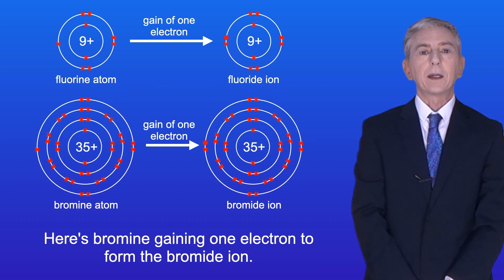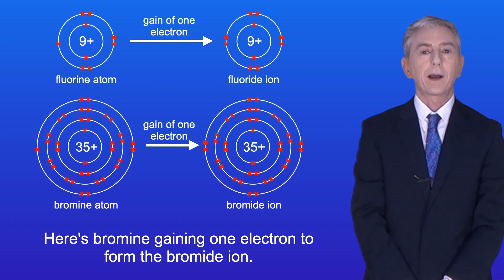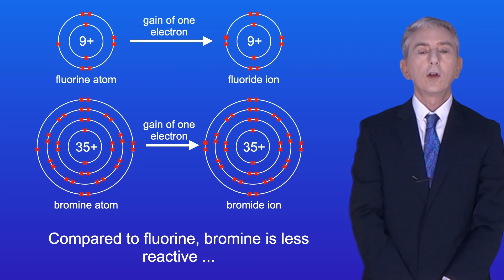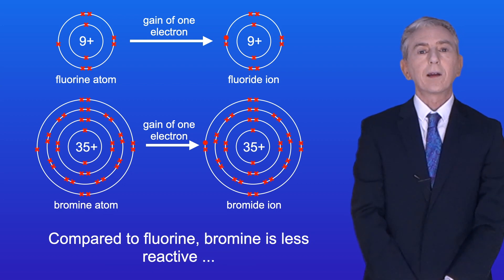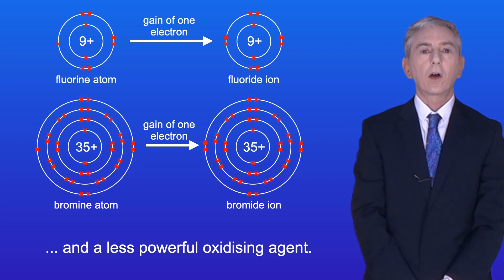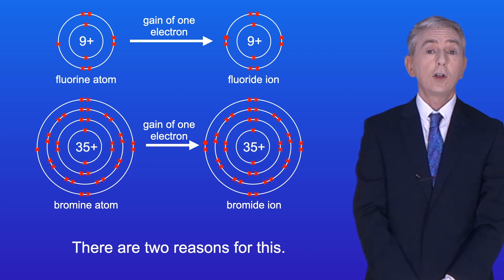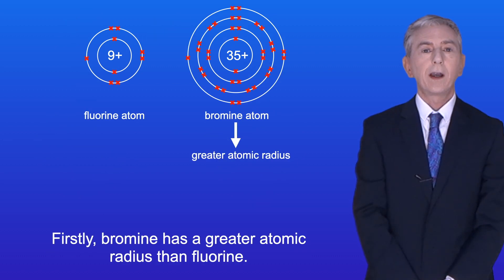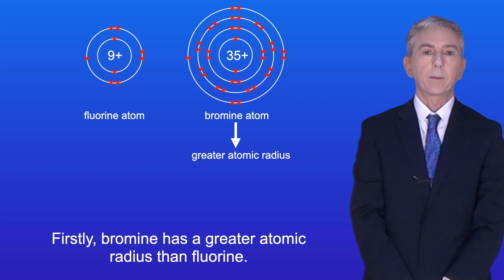Here's bromine gaining one electron to form the bromide ion. Compared to fluorine, bromine is less reactive and a less powerful oxidizing agent. There are two reasons for this. Firstly, bromine has a greater atomic radius than fluorine.